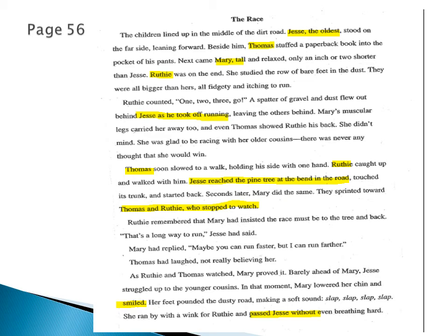Now I'm going to explain how to answer comprehension passages, especially for exams or quizzes. I'll read through quickly and then find the answers. The passage is called 'The Race.' The children lined up in the middle of the dirt road. Jess, the oldest, stood on the far side leaning forward. Beside him, Thomas stuffed a paperback book into his pocket. Next came Mary, tall and relaxed. Ruthie was on the end, studying the row of bare feet in the dust — all bigger than hers.